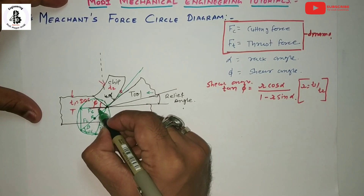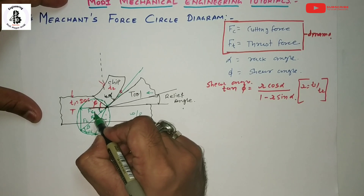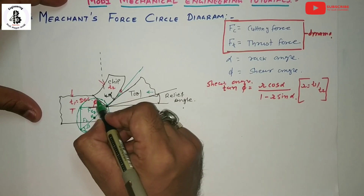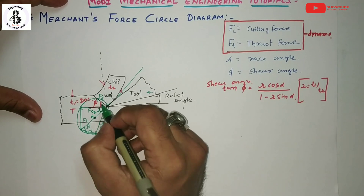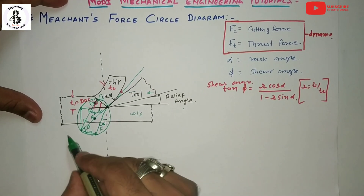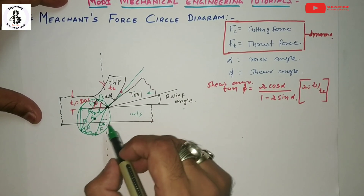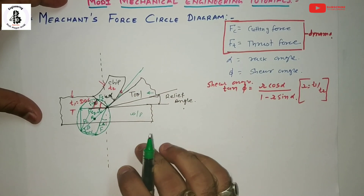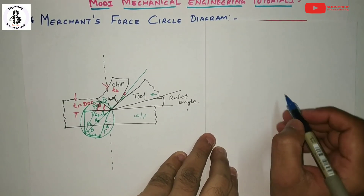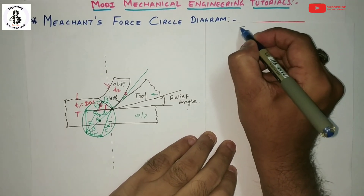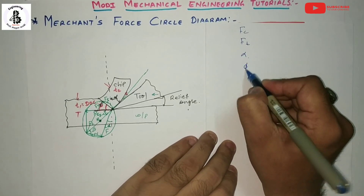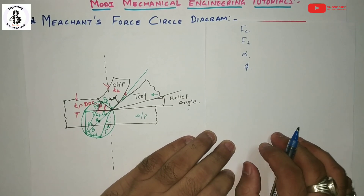The angle at the shear plane is (beta minus alpha). At the shear plane angle, the shear force is Fs and normal to that is Fn. That is the procedure for making a Merchant force circle diagram with the different angles. So if you have FC, FT, alpha, and shear angle phi, you can easily draw the Merchant circle diagram.